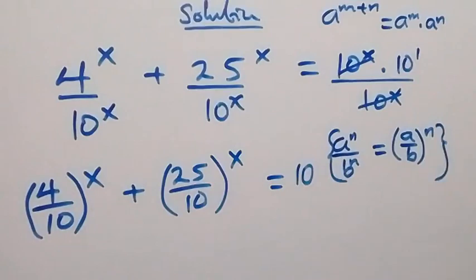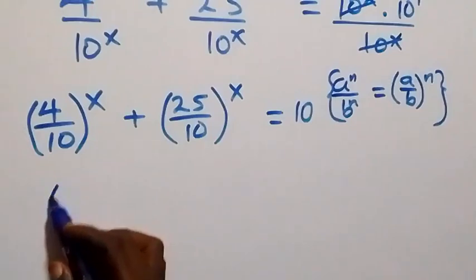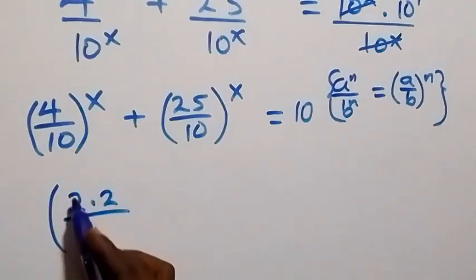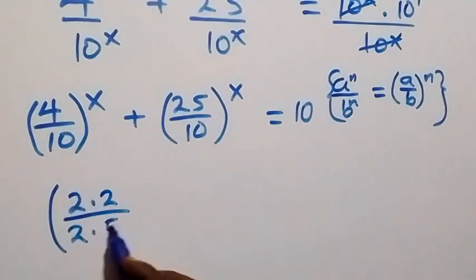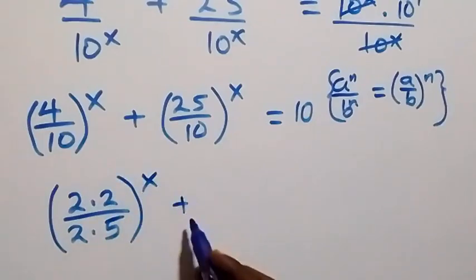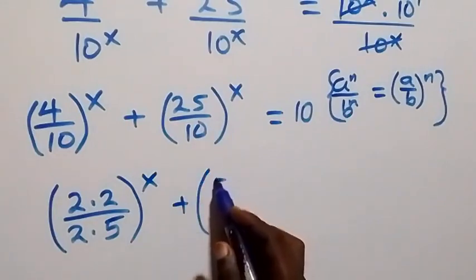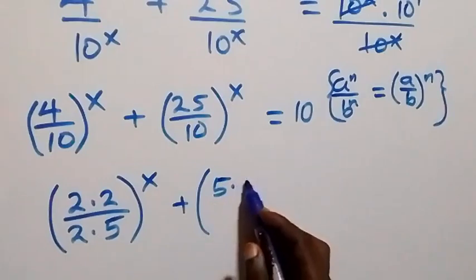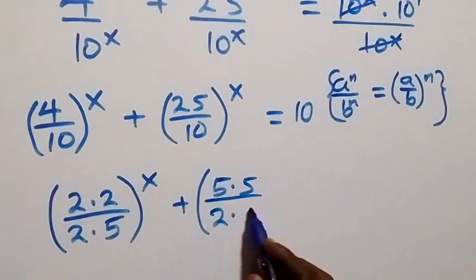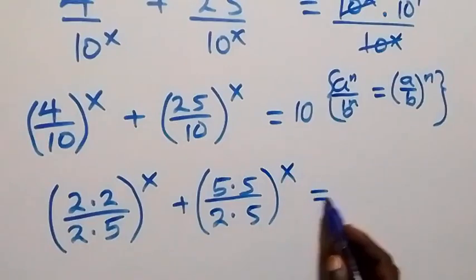We can simplify further: 4 can be written as 2 times 2, and 10 can be written as 2 times 5, which is all raised to power x. Then 25 can be written as 5 times 5, and 10 here also as 2 times 5, raised to power x, equals 10.